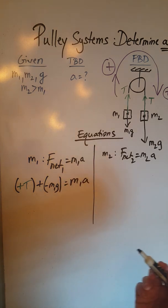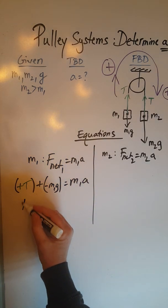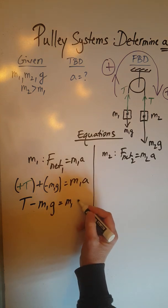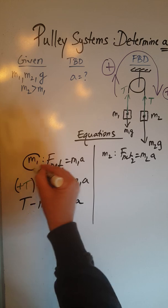When we simplify this to get to the scalar equation we end up having T minus M1G equals M1A, and that is for object M1.